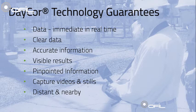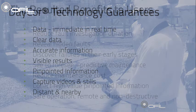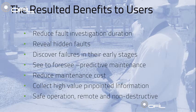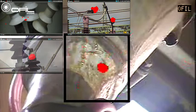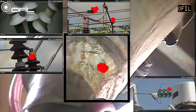Accurate detection and display are maintained over all possible working distances and fields of view. Benefits of using DayCor cameras include reduced fault investigation duration, since discharges are revealed and displayed as soon as the camera is directed towards the inspected installations. Hidden signals overlooked by the bare eye are uncovered by the camera, revealing faults in their early stages when they can still be corrected. Collecting this media and information leads to desirable predictive maintenance.